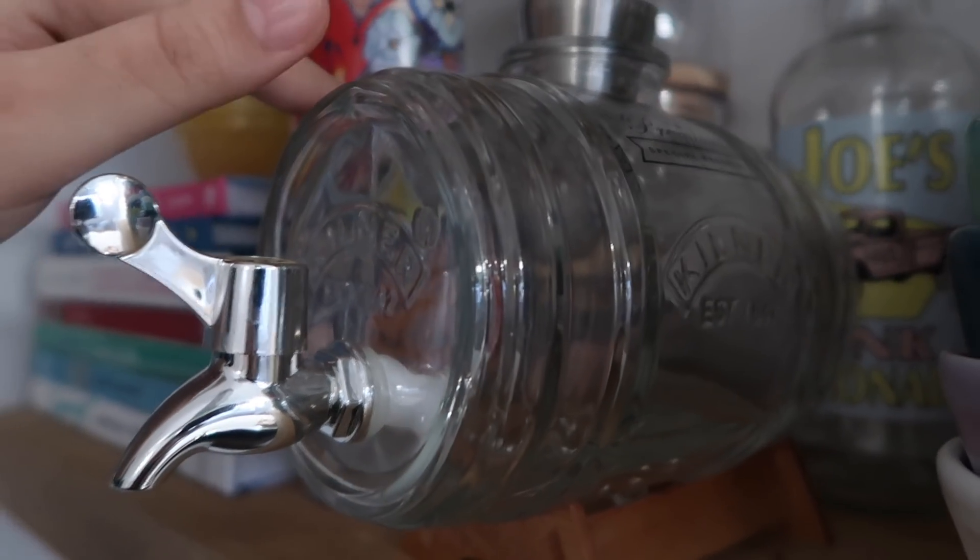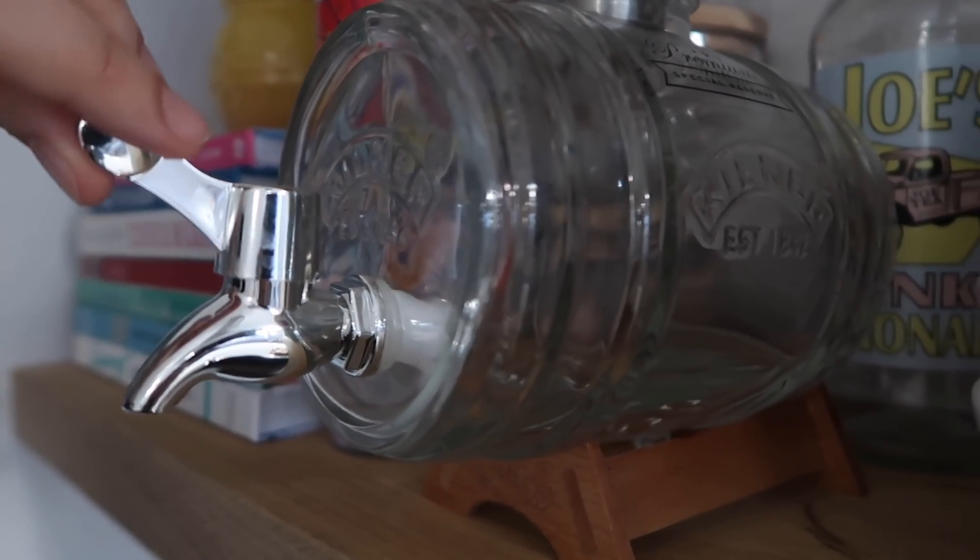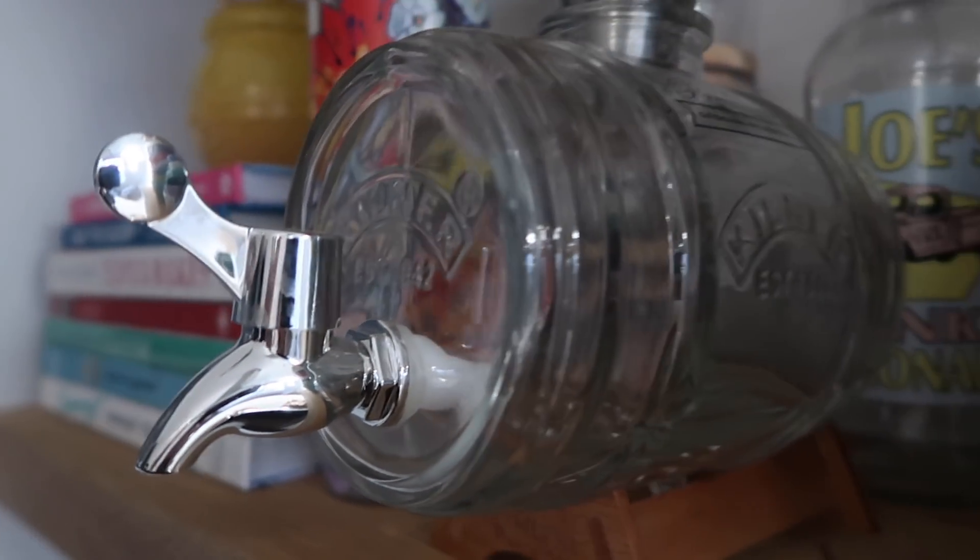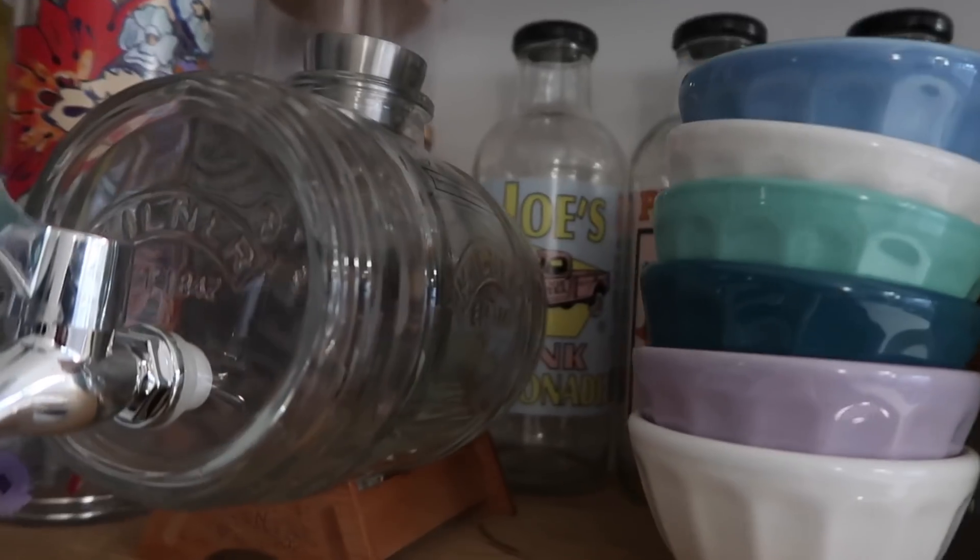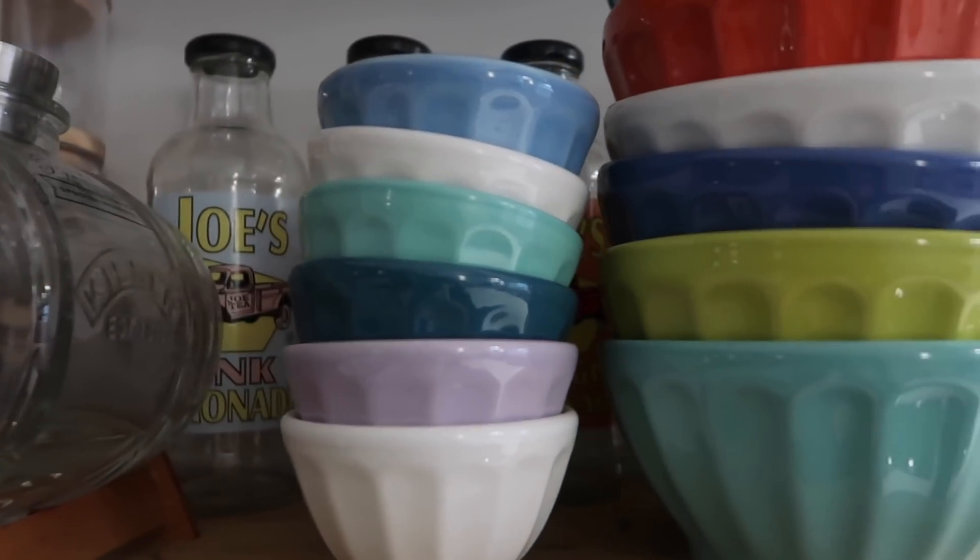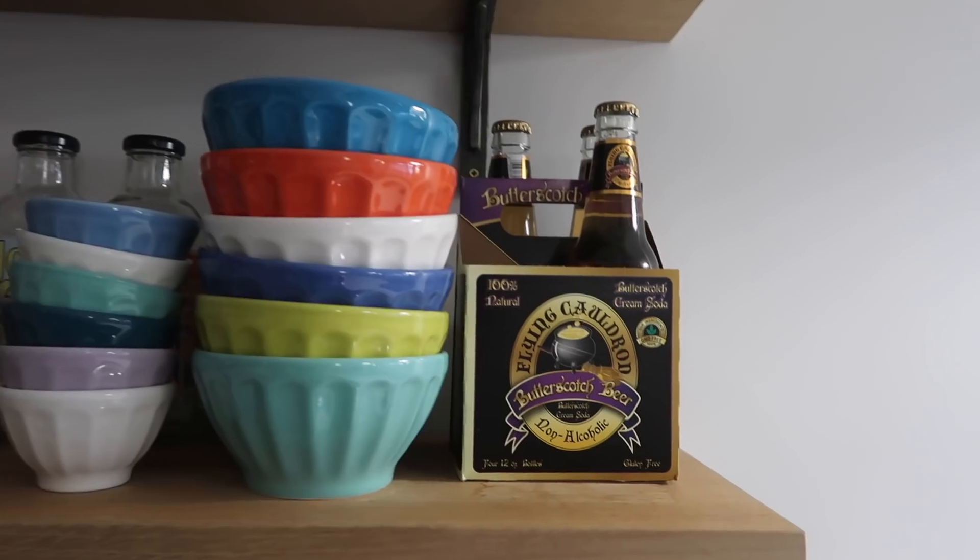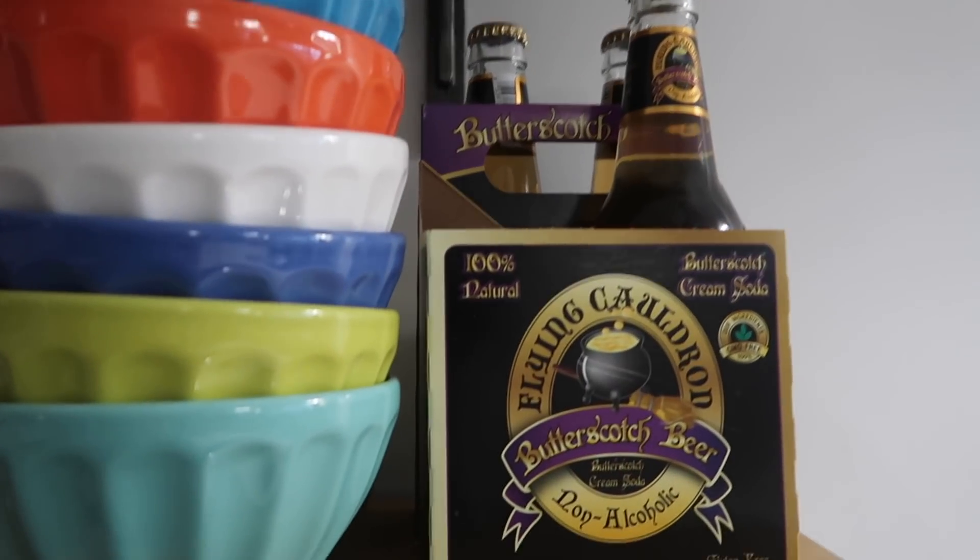And then this I think is for alcohol but I bought it just to put water and stuff. And whenever my friends come then I can fill it up and then they can just, it's like a cooler jug I guess. And then behind I got some Joe's bottles and then these are like cute bowls from Anthropologie. And then what's this, butter beer aka Harry Potter punya drink and it's non-alcoholic.